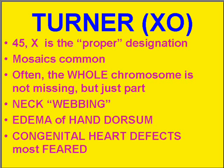In Turner syndrome, the female counterpart, you do not have two X chromosomes — the female only has one. Although mosaics are common, where only some tissues will show it and some won't. The classical features of Turner syndrome are neck webbing, edema of the dorsum of the hand, and usually congenital heart defects — certainly the most feared ones.